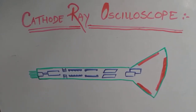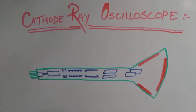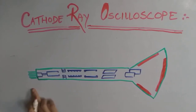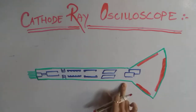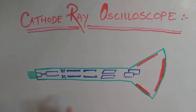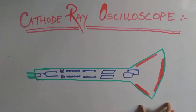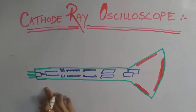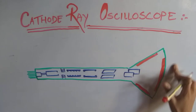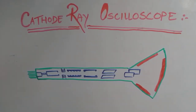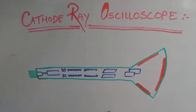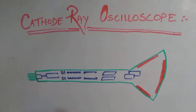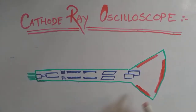A CRO, or cathode ray oscilloscope, is generally used to display and measure various waveforms in electrical circuits. This is the main internal structure of the cathode ray oscilloscope and as you can see it is just like a funnel-shaped glass tube. The main components of the internal structure consist of the electron gun, a deflecting system, and a fluorescent screen.